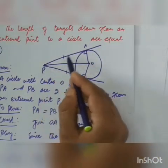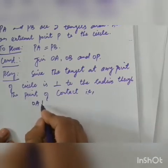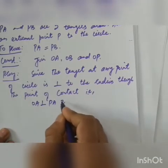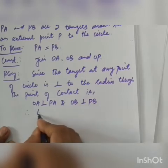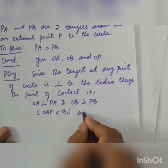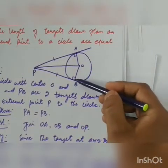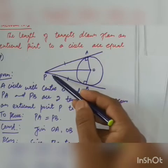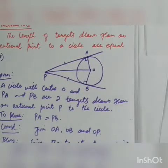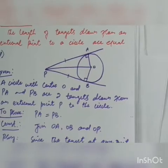OA is perpendicular to PA (the tangent), and OB is perpendicular to PB. Therefore, angle OAP equals 90 degrees and angle OBP equals 90 degrees. So triangle OAP and triangle OBP are both right-angle triangles. To prove: PA equals PB.